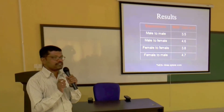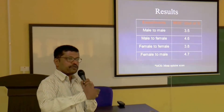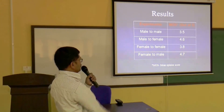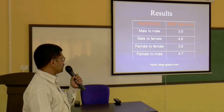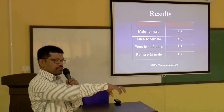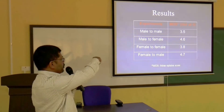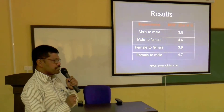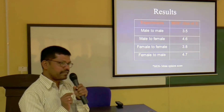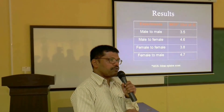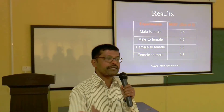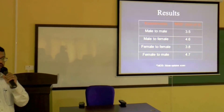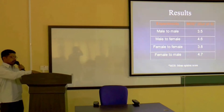In speech research, results are evaluated by having people listen and rank them — this is called the Mean Opinion Score, rated on a 5-point scale. For male to male conversion, the score was 3.5. Male to female was 4.6, female to male was 4.7, and female to female was 3.8. This indicates that human beings are more prominent in identifying gender transformations than same-gender transformations. From one male to another male, people have less identification accuracy, but from male to female, people have better identification.